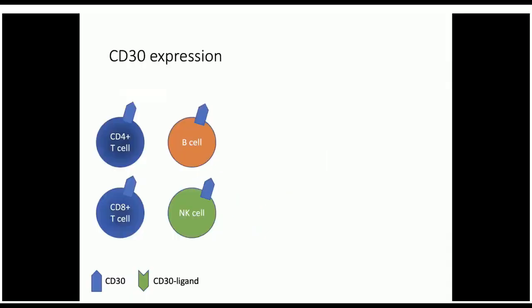What exactly does CD30 mean? Here is a very simplistic view of CD30 and the immune system. The immune system has many different cells. The most common types are T cells, which can be either CD4-positive or CD8-positive.